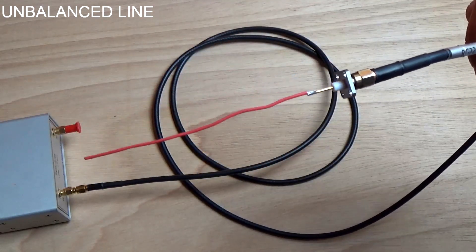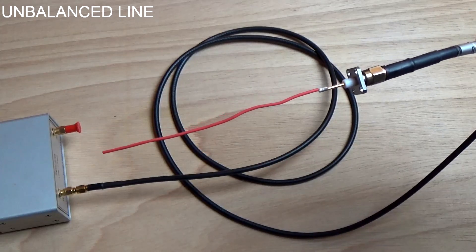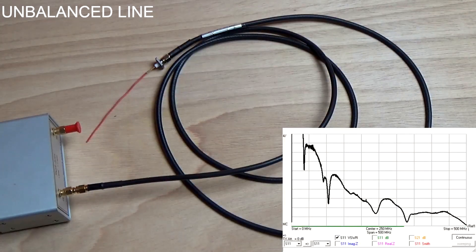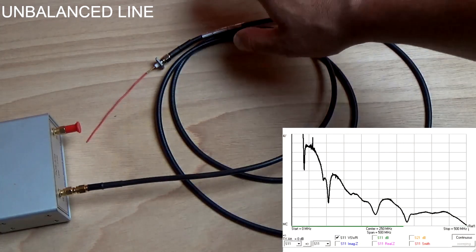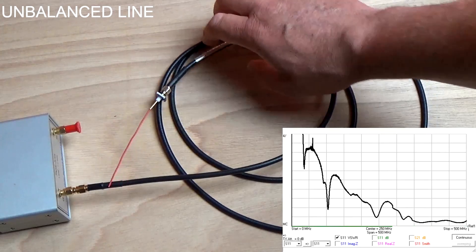Let's now repeat the same experiment but with the short wire connected to the central conductor instead of the previous resistor. In this case, touching the coaxial cable changes the impedance. The coaxial cable is now behaving like the balanced line.